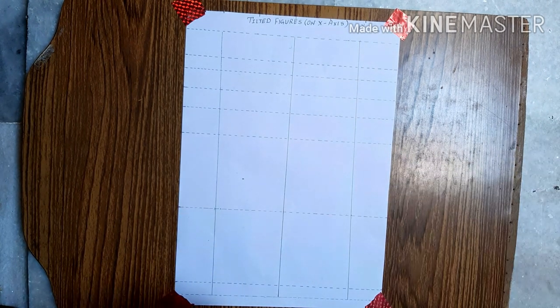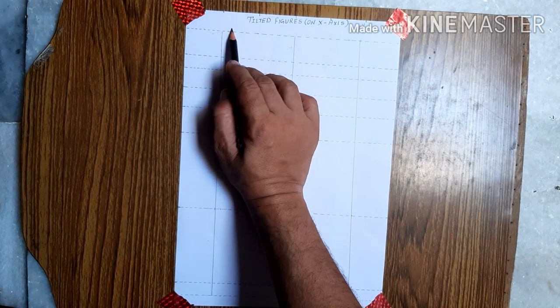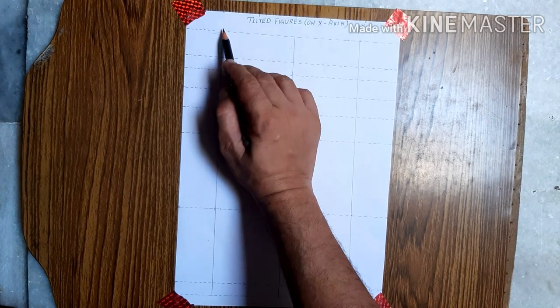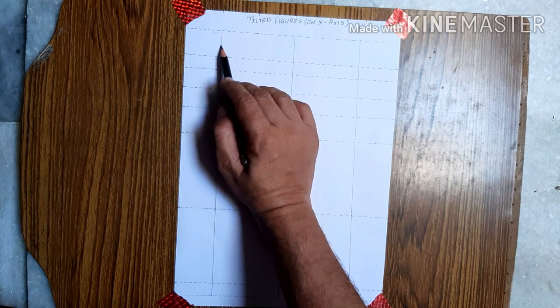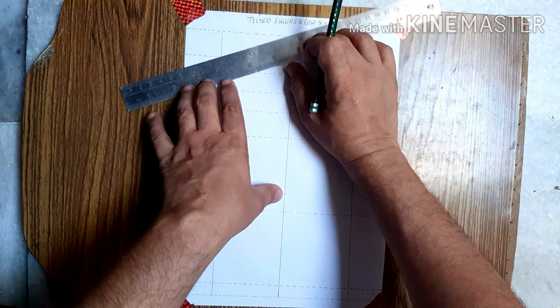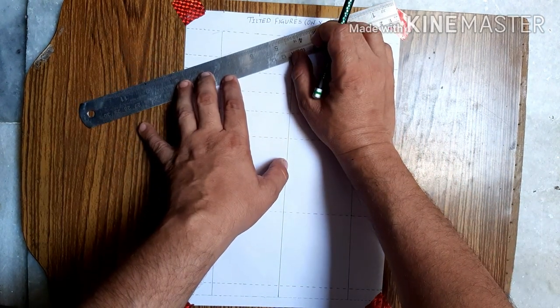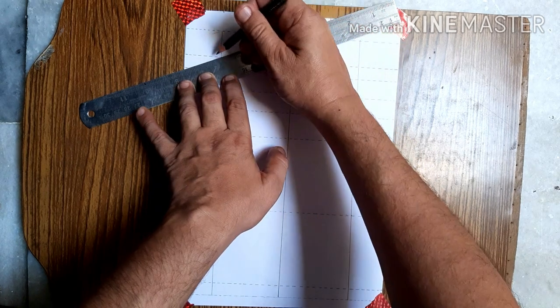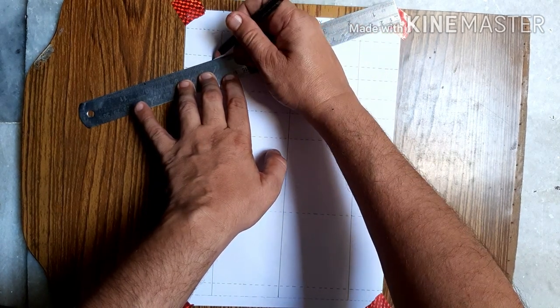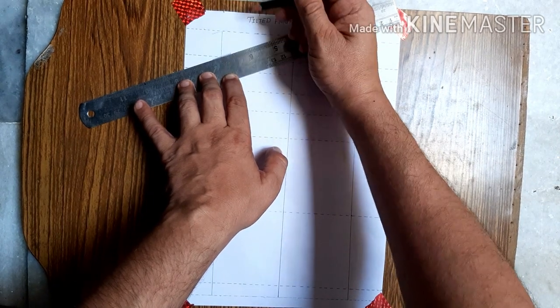Let's start today's topic. First I am tilting the face. For tilting the face, instead of perpendicular lines we can take diagonal lines. As per your requirement and feasibility you can tilt the figure, like three-fourths inch entirely.